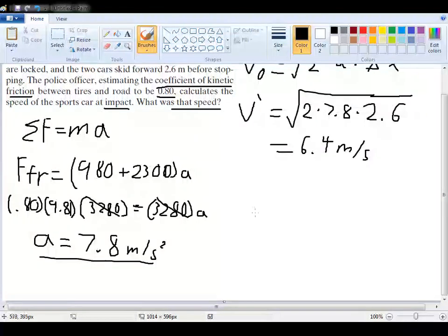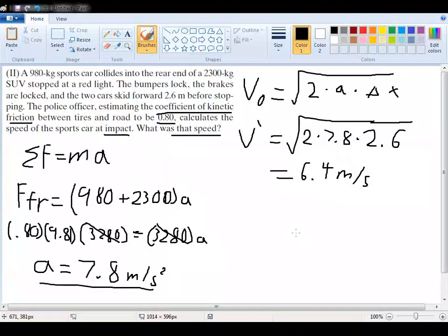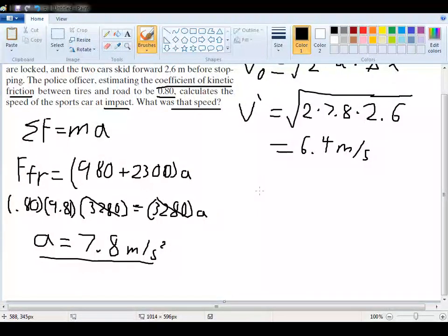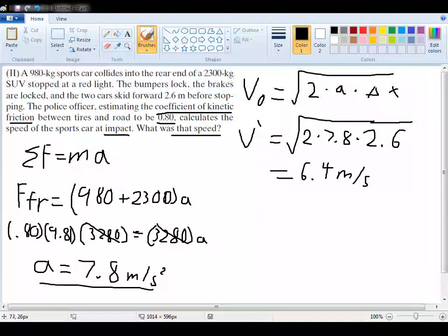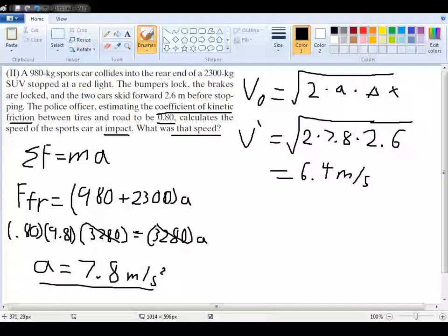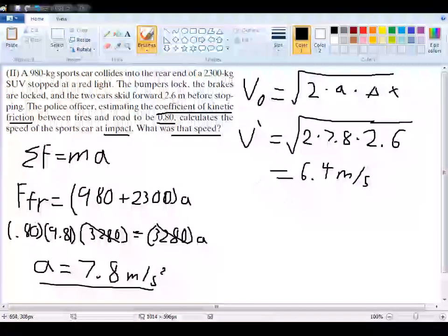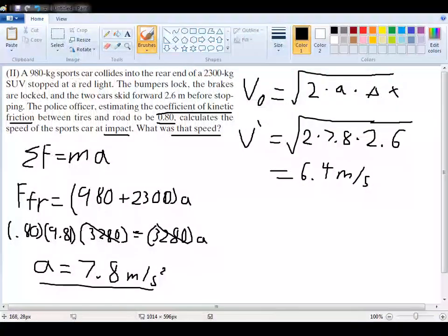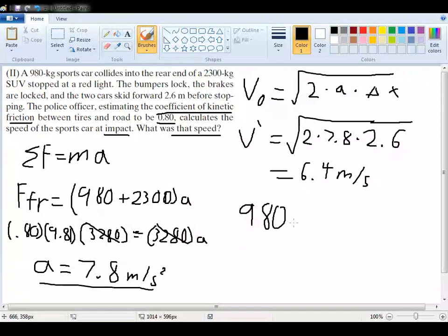So now that we have this, we can plug that into our momentum formula. Remember this is before and after the collision that we use for these formulas. So the initial momentum that we start with—remember the conservation of momentum formula is the momentum of one object plus the momentum of the second object. In this case, since one of the cars is at rest, our total momentum on the left side is just going to be the sports car. So we're going to start off with 980 times the V that we're looking for. We still don't have the original V. That's our final answer, whatever that is.